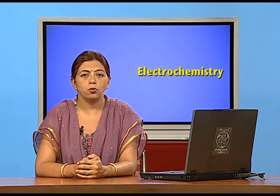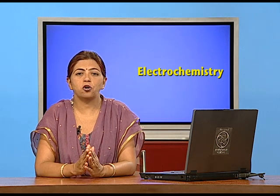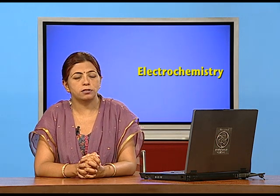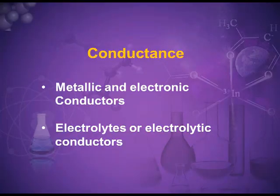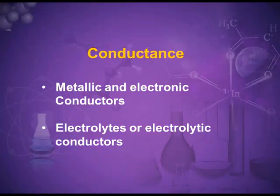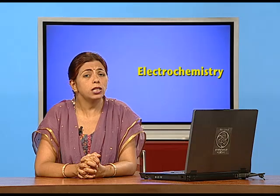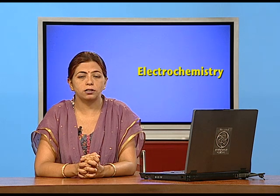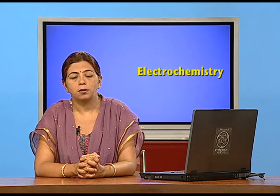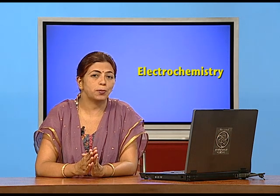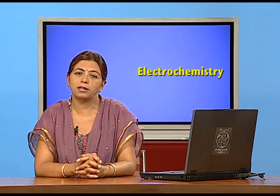We will now concentrate on the different types of conductors. There are two types: metallic conductors, which are also known as electronic conductors, and the other type are electrolytic conductors. In this unit, we have to concentrate on the electrolytic conductors and electrolytic conductance. But prior to that, let me differentiate between the metallic conductors and the electrolytic conductors.